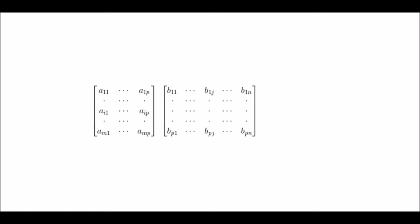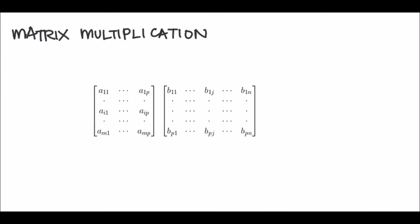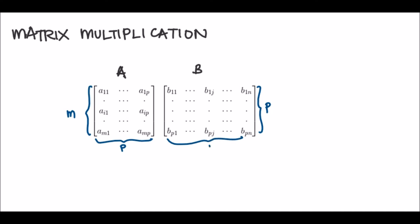Now on to the final topic in this video: matrix multiplication. How do we multiply two matrices together? How do we find the product of two matrices? Given in this example is a general matrix A multiplied with matrix B. The size of matrix A is M rows and P columns, and for matrix B, the number of rows is P and the number of columns is N. So matrix A is an M by P matrix and B is a P by N matrix.